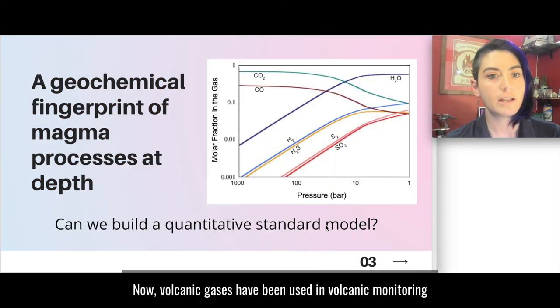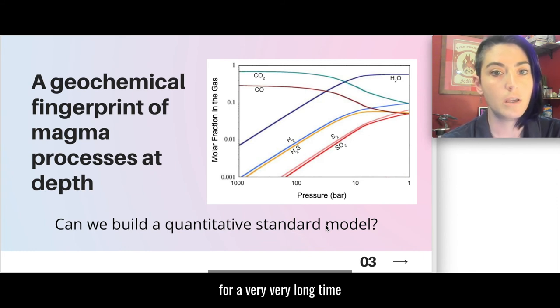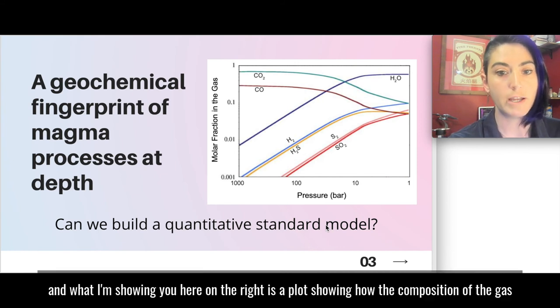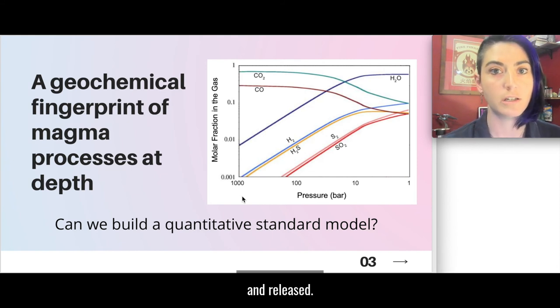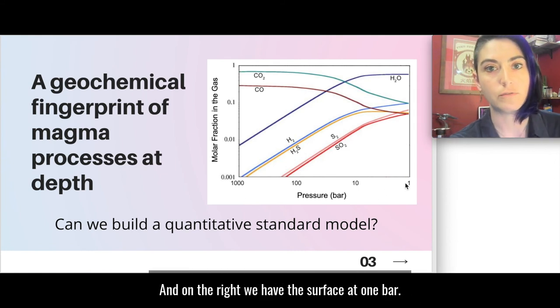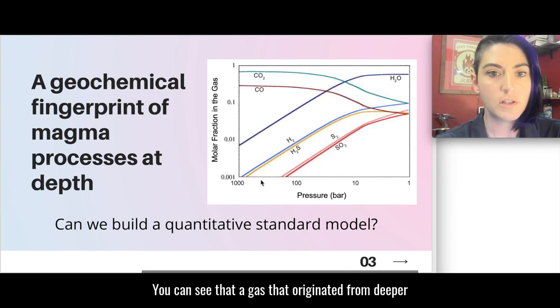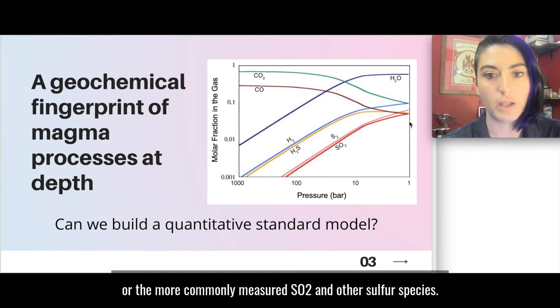Now volcanic gases have been used in volcanic monitoring for a very long time. What I'm showing you here on the right is a plot showing how the composition of a gas will change depending on the pressure at which it was created and released. So here the left side of the plot is deep within the volcanic system and on the right we have the surface at one bar. You can see that a gas that originated from deeper in the system is going to be more rich in CO2. A gas that came from very shallow in the system will be more rich in H2O or the more commonly measured SO2 and other sulfur species.